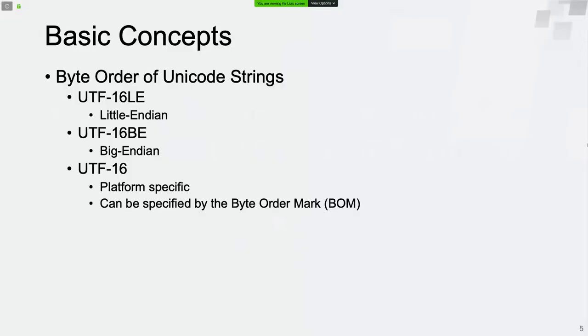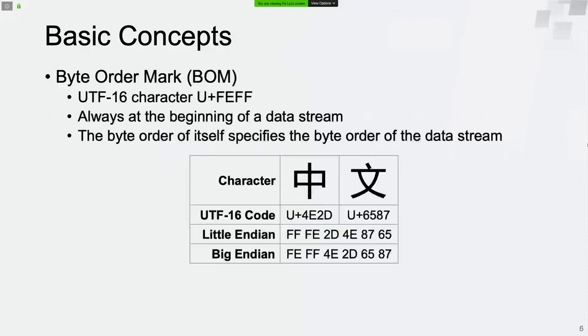We can specify the byte order in the character set name. LE indicates little endian and BE indicates big endian. The byte order will be platform-specific if not explicitly specified. However, we can specify it using the byte order mark character. The byte order mark is the UTF-16 character FEFF, and it always appears at the beginning of a data stream.